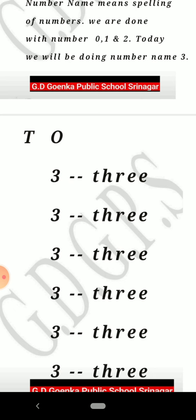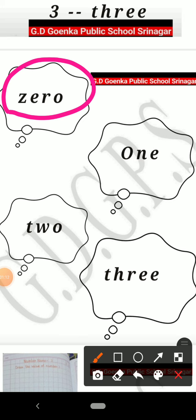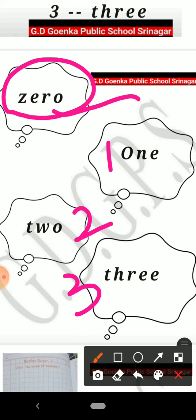We are done with number 0, we are done with number 1, we are done with number 2, and we are done now with number 3 as well. The spelling of 0 is Z-E-R-O, 1 is O-N-E, 2 is T-W-O, and 3 is T-H-R-E-E.